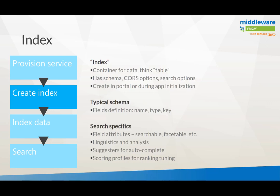An index you have to think of as a kind of table which has columns — names, types, and keys. You can apply attributes on top of those fields: you can make them searchable, facetable, sortable, filterable. You can do that type of stuff.